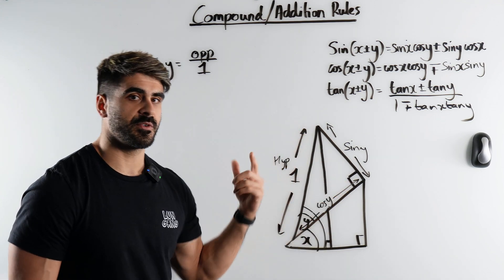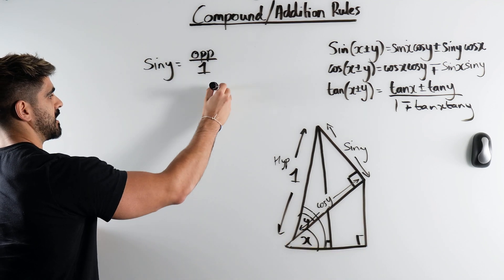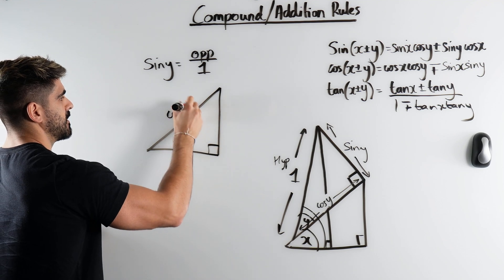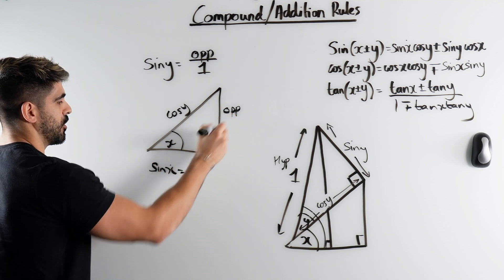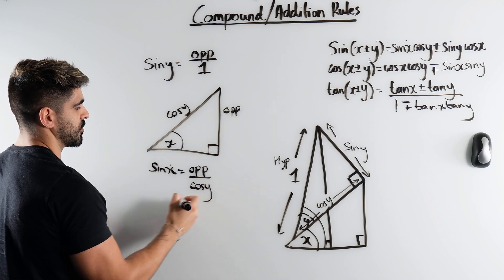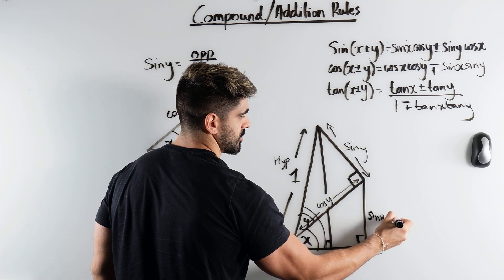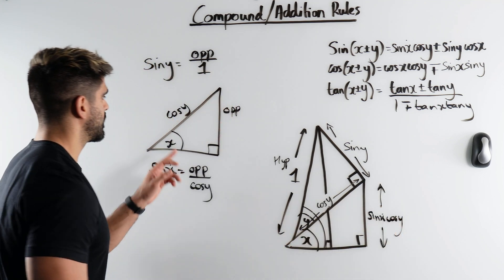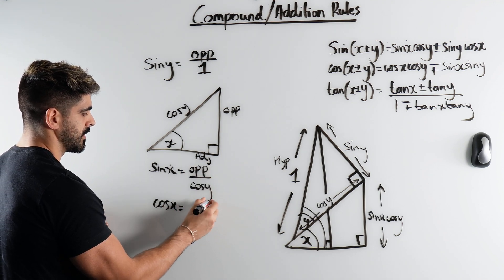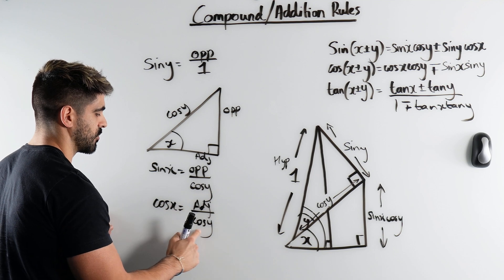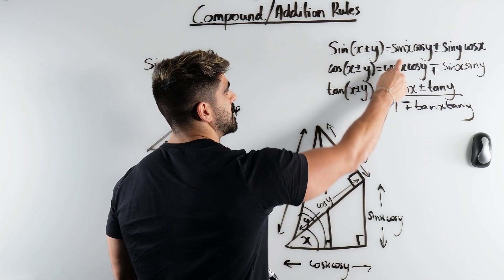Okay so this triangle here is fully labelled. Now we're going to use this as our new hypotenuse to find these lengths. I'm just going to redraw it over here. So we have cos of y, and this angle is x. This is the opposite, so we're going to do sine again. Sine of x is the opposite divided by the hypotenuse cos y, so the opposite is sine x cos y. The adjacent side: cos of x is the adjacent divided by the hypotenuse which is cos of y, so the adjacent is cos x cos y.